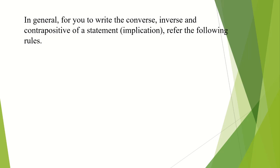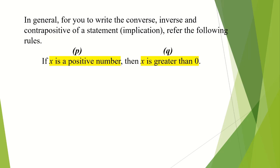In general, for you to write the converse, inverse, and contrapositive of a statement or implication, you may refer to the following rules. The original implication is: if x is a positive number, then x is greater than zero. Where 'x is a positive number' you can label as p, or the antecedent, and 'x is greater than zero' you can label as q, or the consequent.